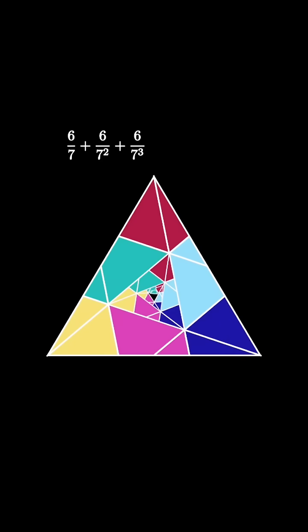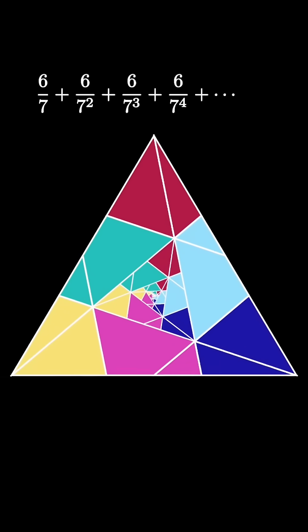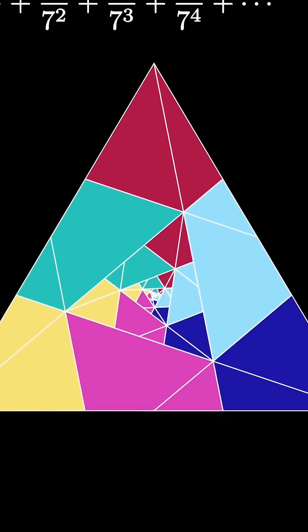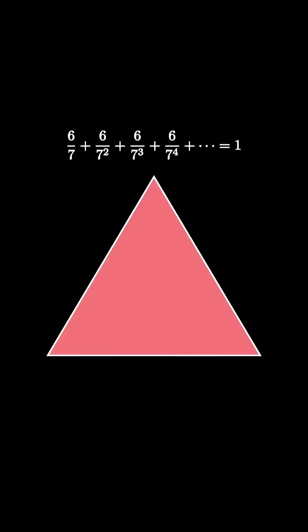Repeat this process over and over again, each time shading 6 7ths of the remaining 1 over 7 to the n. If we consider the infinite sum, which corresponds to the limiting process, eventually the entire triangle will be shaded, and that means that the infinite sum we have is equal to 1.